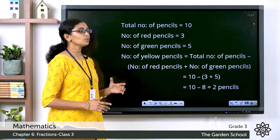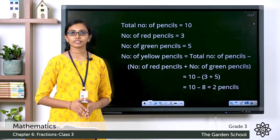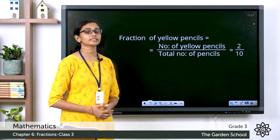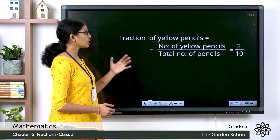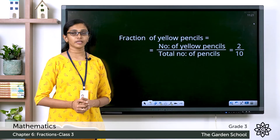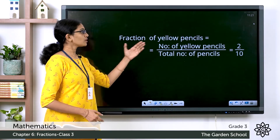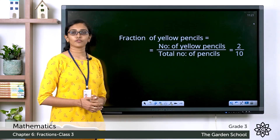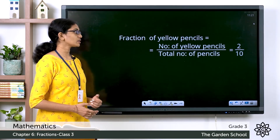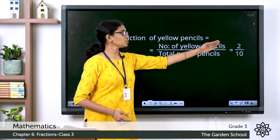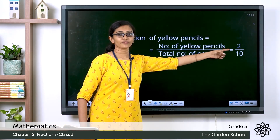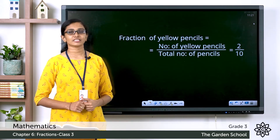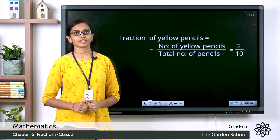So Ahmed had 2 yellow pencils. The fraction of the yellow pencils will be the number of yellow pencils divided by the total number of pencils, which is equal to 2/10 — where 2 is the number of yellow pencils and 10 is the total number of pencils he has. Clear?